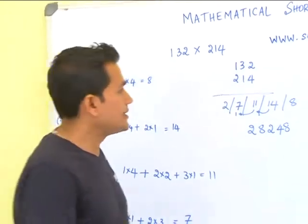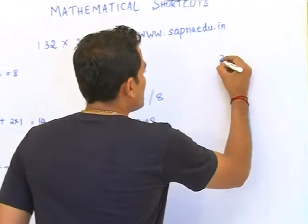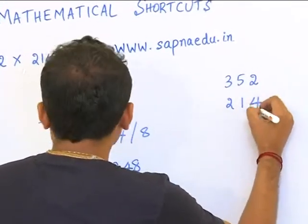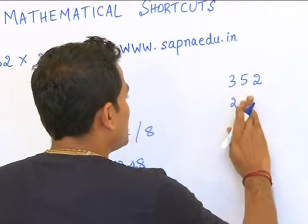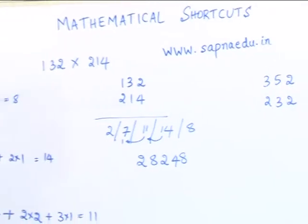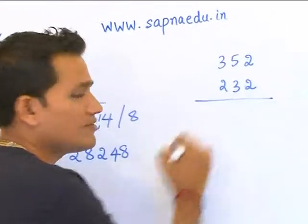So, can we do one more example? Let's say 352 into 248. Let's do 238. Let's now go through these steps. We do it here itself.